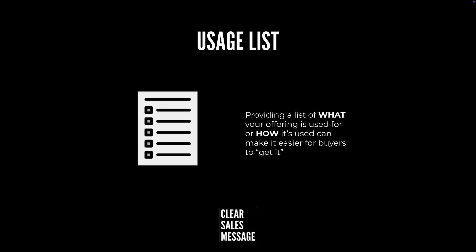A usage list is simply a tagline — a couple of words put together that's designed to help buyers understand what you offer or how your offering works, by using a few simple bullet points.